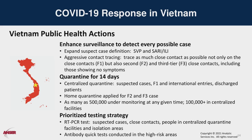Vietnam has also done very aggressive surveillance and detection, including contact tracing not just of the first line of close contacts, but those people's contacts, and then those people's as well — three tiers of contact tracing, regardless of whether they show symptoms. This means that even with few cases, a very large number of people — half a million or more during flare-ups — could be quarantined. Vietnam housed all suspect cases, first-tier contacts, international entries, and discharged patients in centralized quarantine facilities. Second- and third-tier contacts were asked to quarantine at home. Vietnam supported this strategy with a prioritized testing protocol, using more accurate PCR tests for suspect cases and close contacts, while quicker antigen tests were used on populations in high-risk areas.